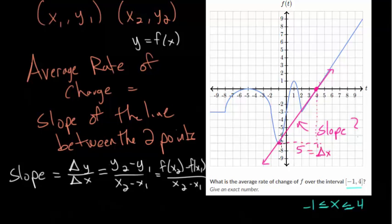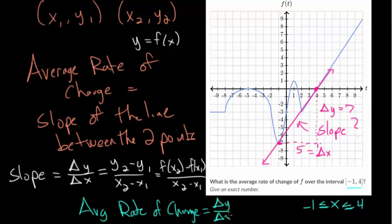And the y values went from -7 to 0, so the y values went up 7. So our average rate of change over this interval from -1 to 4 would be equal to that change in y divided by the change in x, which we found to be 7 for the change in y and 5 for the change in x. So 7/5 is the slope of this line, but it's also the average rate of change.